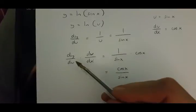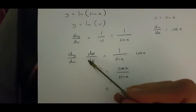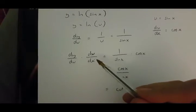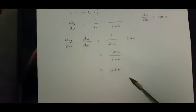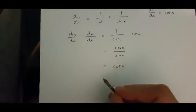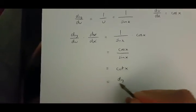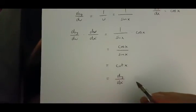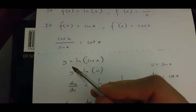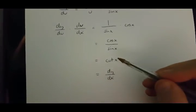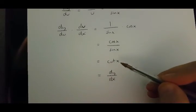And like I said, dy over du times du over dx equals dy over dx. So, when y equals ln sin x, dy over dx is equal to cot x.